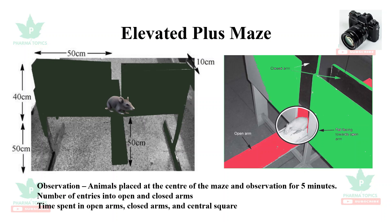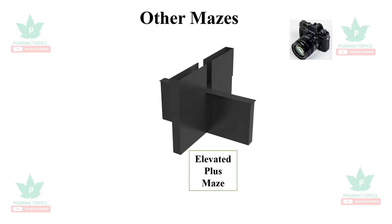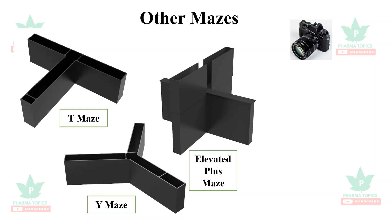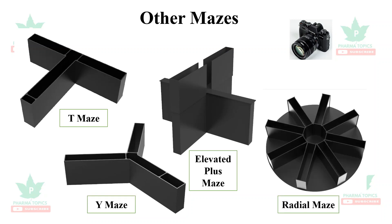Other mazes apart from the elevated plus maze include the T maze, which is T-shaped, the Y maze, which is Y-shaped, and the radial maze. In all cases, the animal is placed at the center and allowed to freely move to any of the arms. All of these have automatic recordings.